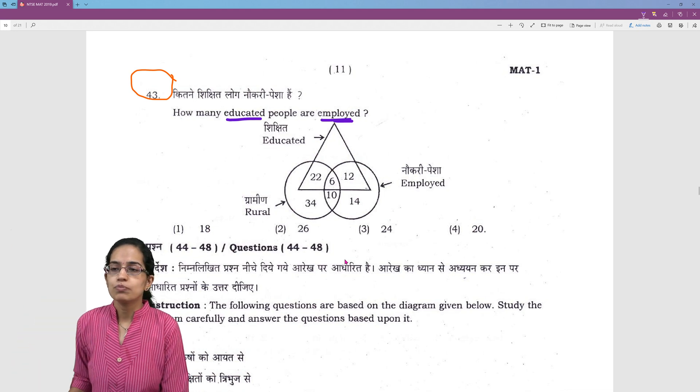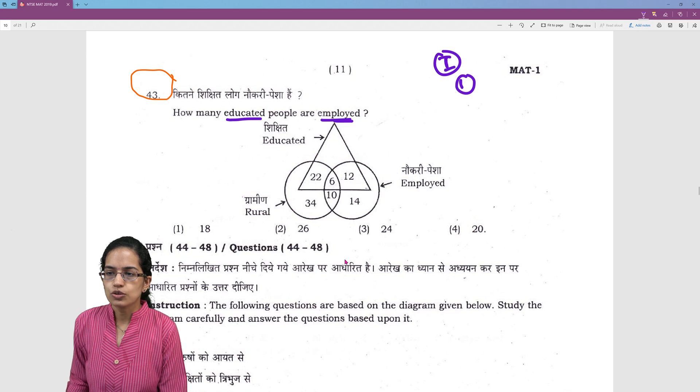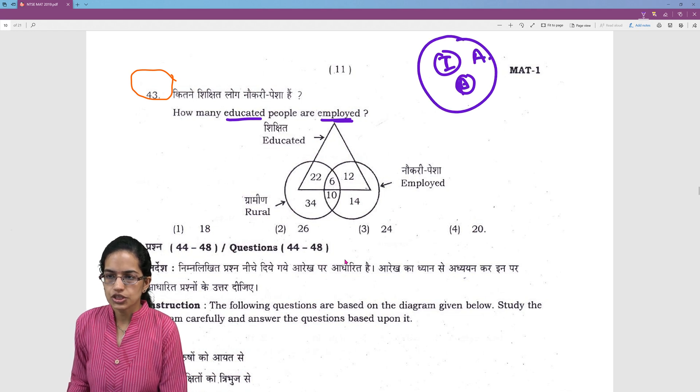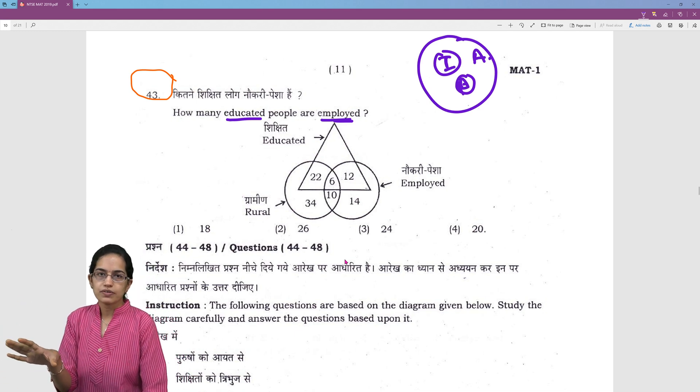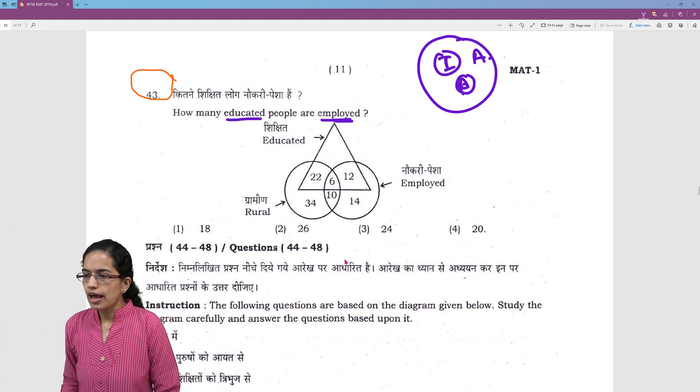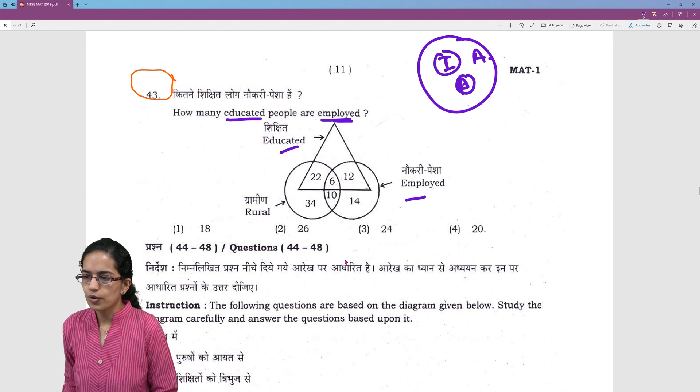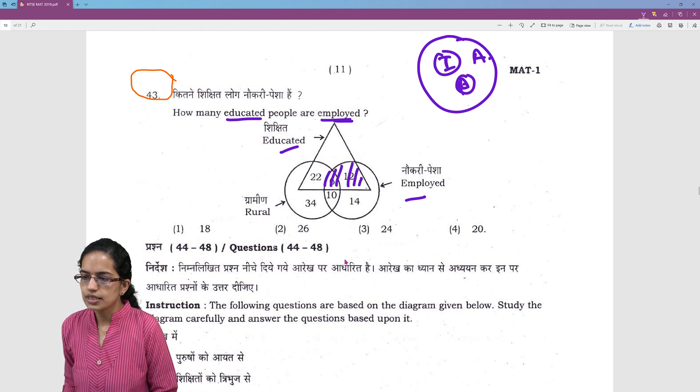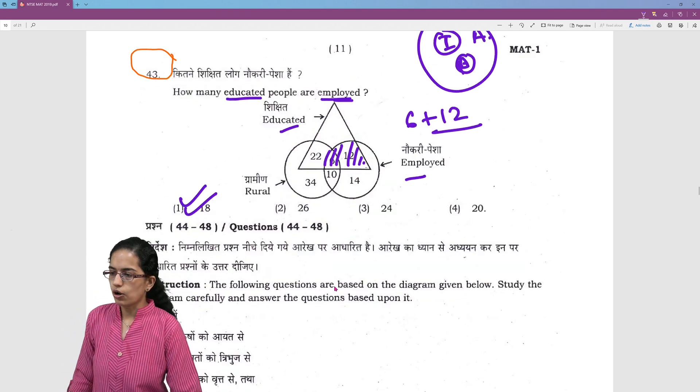The previous Venn diagram problem that we did was on India and Pakistan and two of the countries lying within the continent of Asia. That was arrangement of Venn diagram. Here we have the display of the Venn diagram saying that you have educated and employed people. So, how many people are educated and employed would be this region and this is 6 plus 12. So, you would have 18 as the correct option.